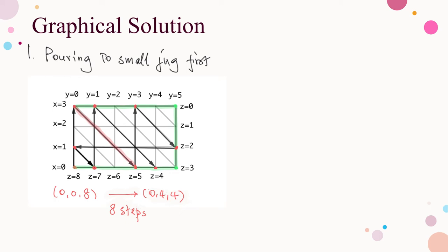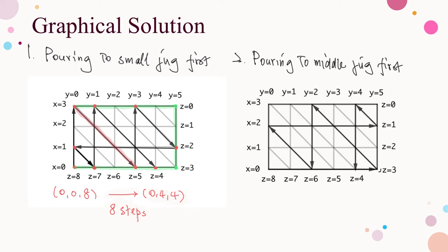There are really two choices in the first step. To confirm the least number of steps, we need to check Case 2: pouring water to the middle jug in the first step. In that case, 7 steps are needed. Therefore, the least number of steps for this problem is 7, achieved by pouring water first from the large jug to the middle one.